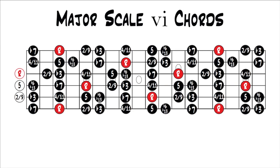This is part 4.9 from our series, Music Theory for Guitar. If you'd like to go back and start at the beginning, you can click the link on the screen. So now we're looking at chords that can be built off the sixth note of the major scale — so six chords.